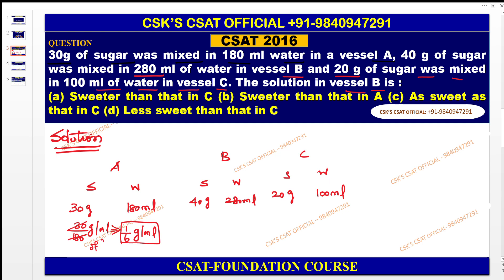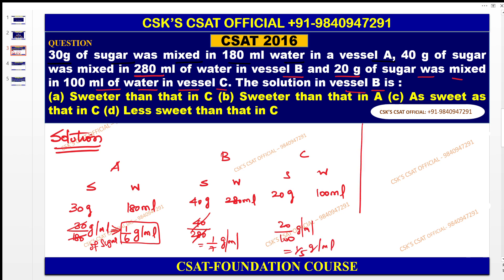For vessel B: 40 by 280, cancel, it becomes 1/7 gram per ml. For vessel C: 20 by 100 gram per ml, which is equal to 1/5 gram per ml. Now which is the greatest? C is the greatest — 1/5 is greater than 1/6, which is greater than 1/7. So the order is C, A, B.